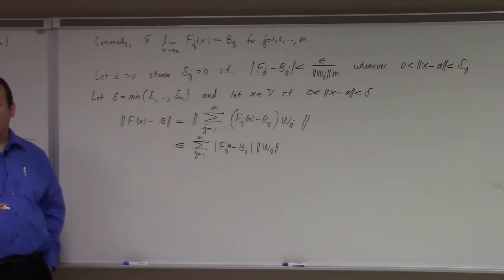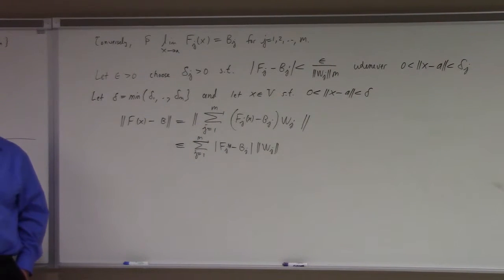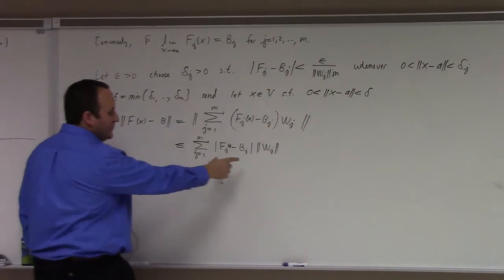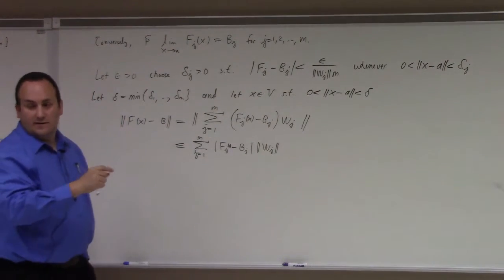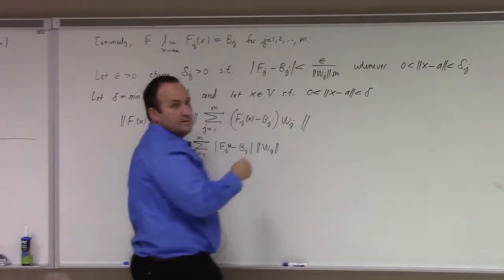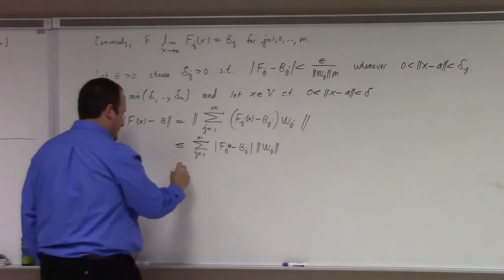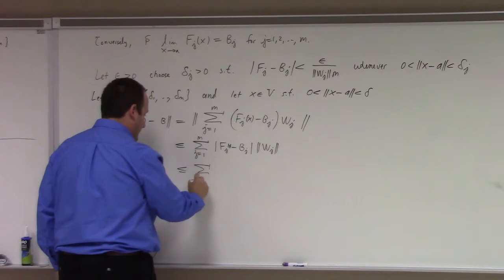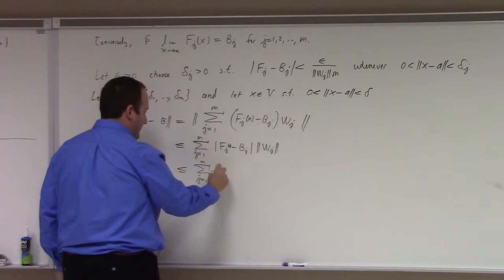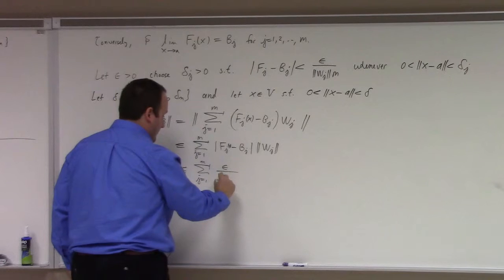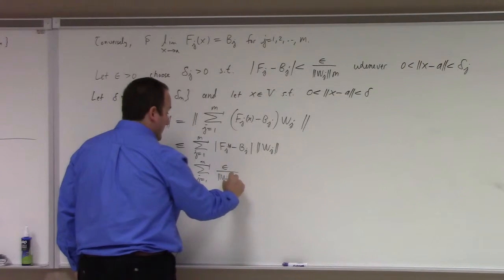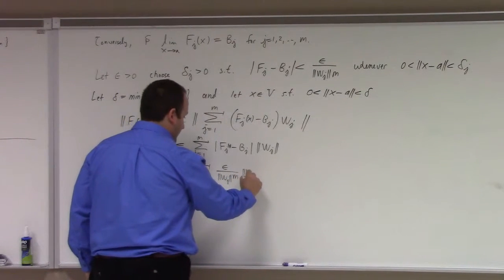But what did we assume about... We chose delta so that it's less than delta 1, delta 2, all the way to delta dm. So I have that every one of these things is smaller than this. So this is less than or equal to the sum j equals 1 to m of epsilon divided by the norm of wj, m times the norm of wj.